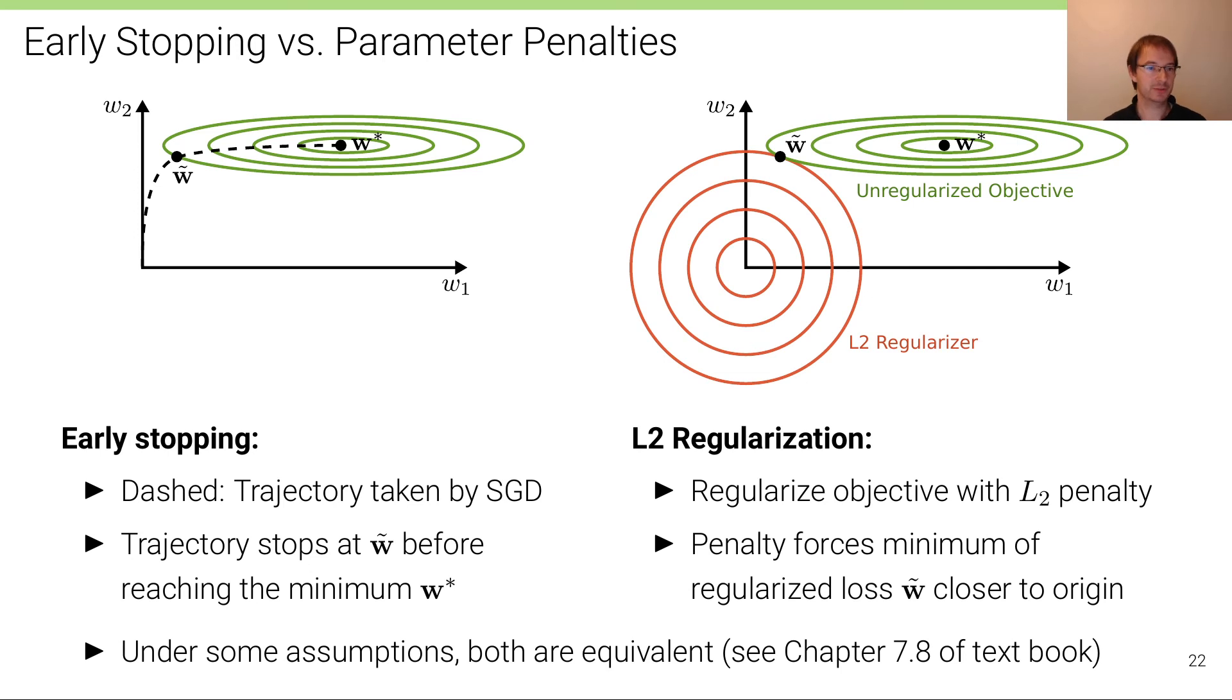This simple early stopping strategy has an analogy to L2 regularization. In fact, under some assumptions, both are actually equivalent. Here on the left we can see an illustration of what early stopping does. We can see the parameter trajectory. In this case, we assume parameters are initialized to zero, which is not possible, so it's like something close to zero with some noise. This dashed trajectory is then the trajectory that takes us via SGD, via gradient descent, closer to the solution of the unregularized objective in this case.